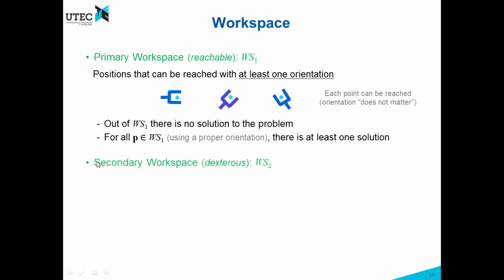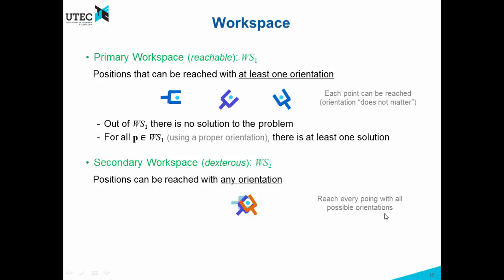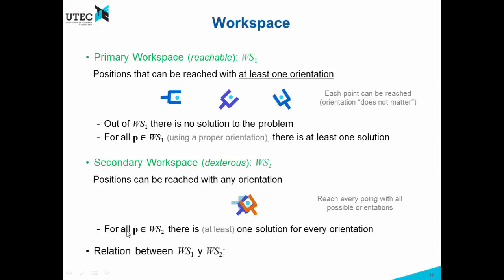The other workspace is called the secondary workspace WS2, or the dexterous workspace. It contains all positions that can be reached with any orientation — that is, with all possible orientations. For example, if a point is inside the secondary workspace, we can reach it with this orientation, also with this orientation, also with this orientation, or in general with any orientation. For all points in this dexterous workspace, there is at least one solution for every single orientation. The relation between these two workspaces is that WS2 is contained within WS1.